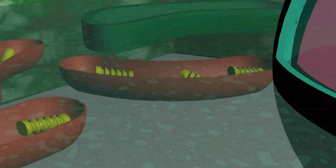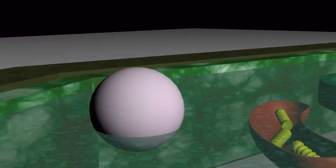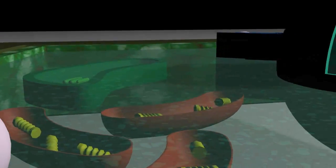The lysosomes are another holder of enzymes in the cell. Located within the cytoplasm, the lysosomes break down waste and other cellular debris.